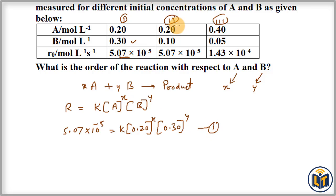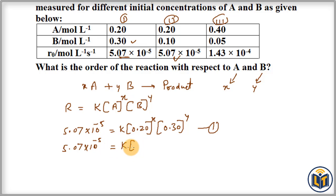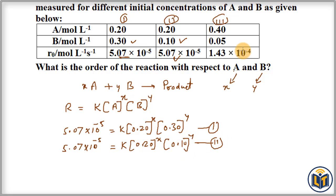The second experimental data gives: rate of reaction 5.07 × 10⁻⁵ is equal to K times [A] = 0.20 raised to power X, times [B] = 0.10 raised to power Y. This is the second equation.